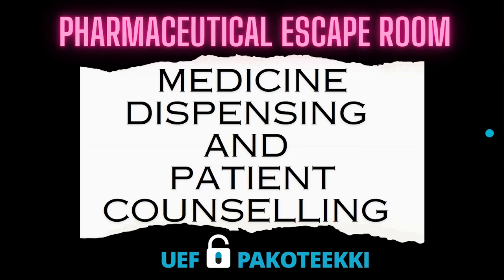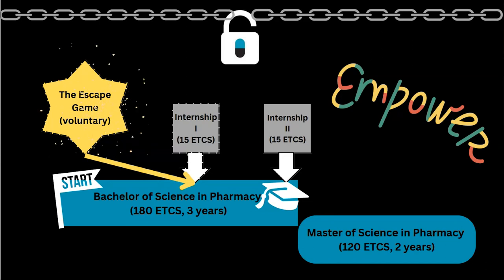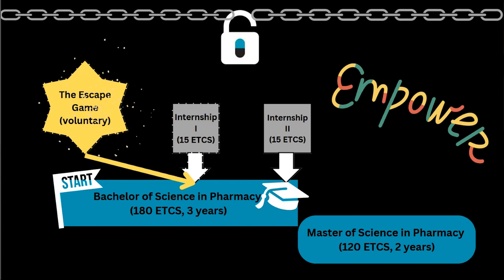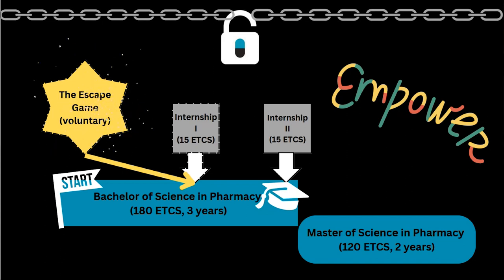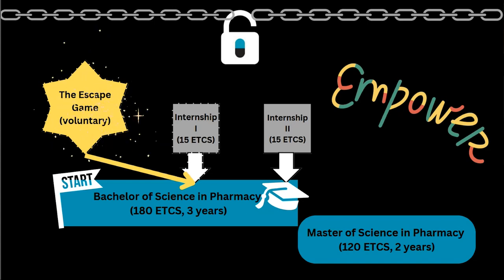A few words about our degrees. We have bachelor and master degree programs in pharmacy. The bachelor of pharmacy is a three-year undergraduate degree and every year we take in about 200 students. This program includes in years two and three an internship, meaning practicing in a community pharmacy. Our game is voluntary for the students — they can play this game after the second year, just before the practical training, so they can practice the skills they are going to need during the internship. Our aim is to give our students a sense of empowerment so that they are confident they can manage in the pharmacy.